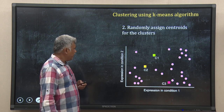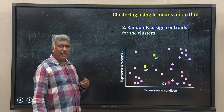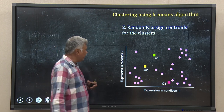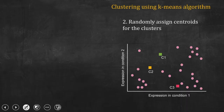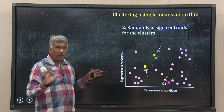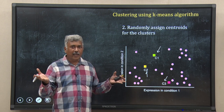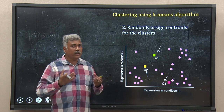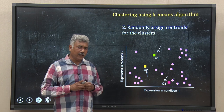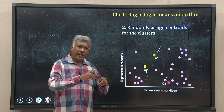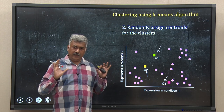The next step is you randomly assign the center, or what we call centroid, for these clusters. Since I have k equal to 3, I have three centroids c1, c2 and c3, and I have randomly positioned them in this 2D space. Because I do not know where the clusters are, I do not know where their centroid or central position is, so I have just randomly seeded these three centers.